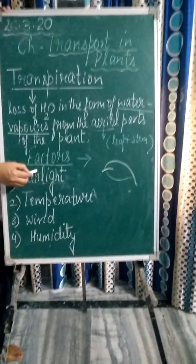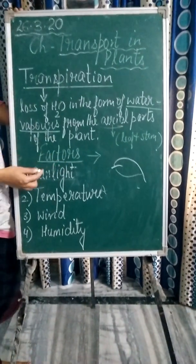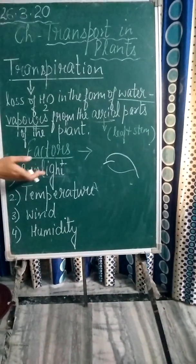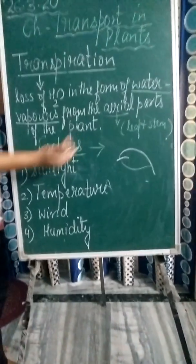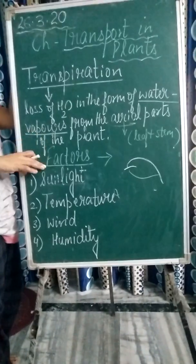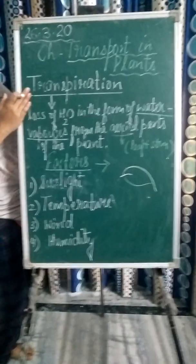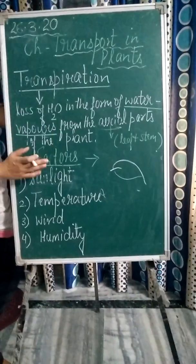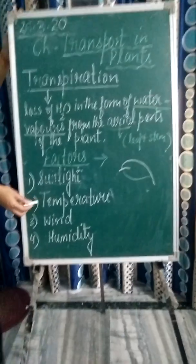How does sunlight affect the rate of transpiration? During the daytime when there is sunlight, the stomata usually opens for the exchange of respiratory gases to carry out photosynthesis. The water also gets a chance to escape from the stomata in the form of water vapors by a process known as transpiration. But during nighttime there is no sunlight, so the stomata closes and transpiration also stops.